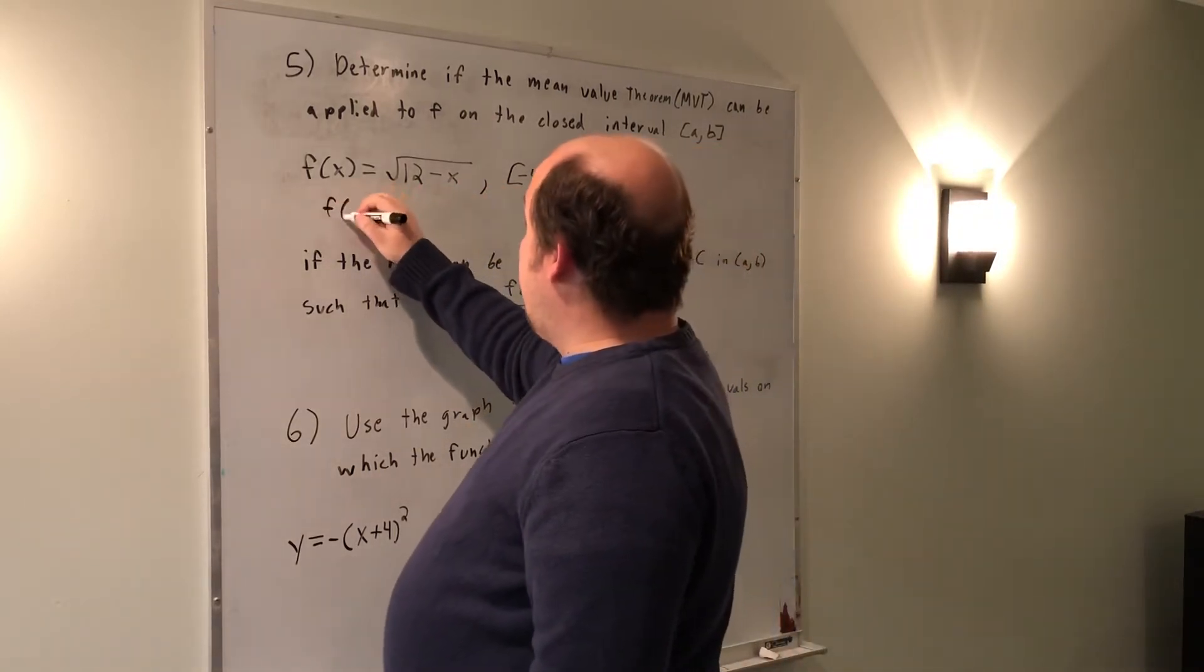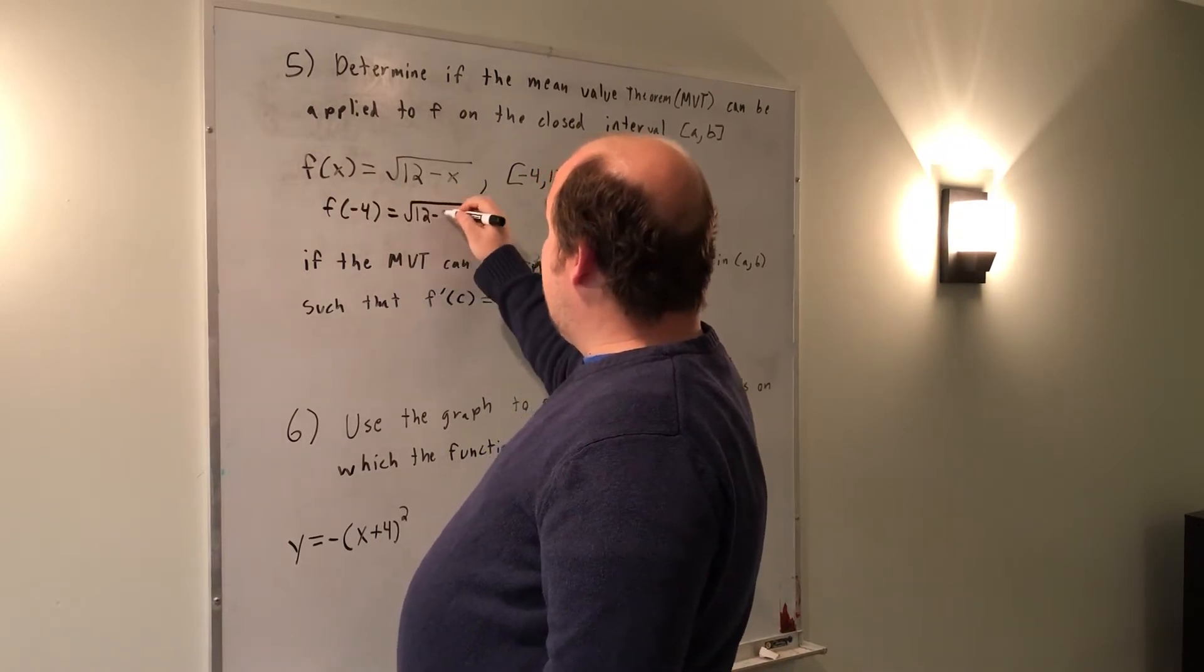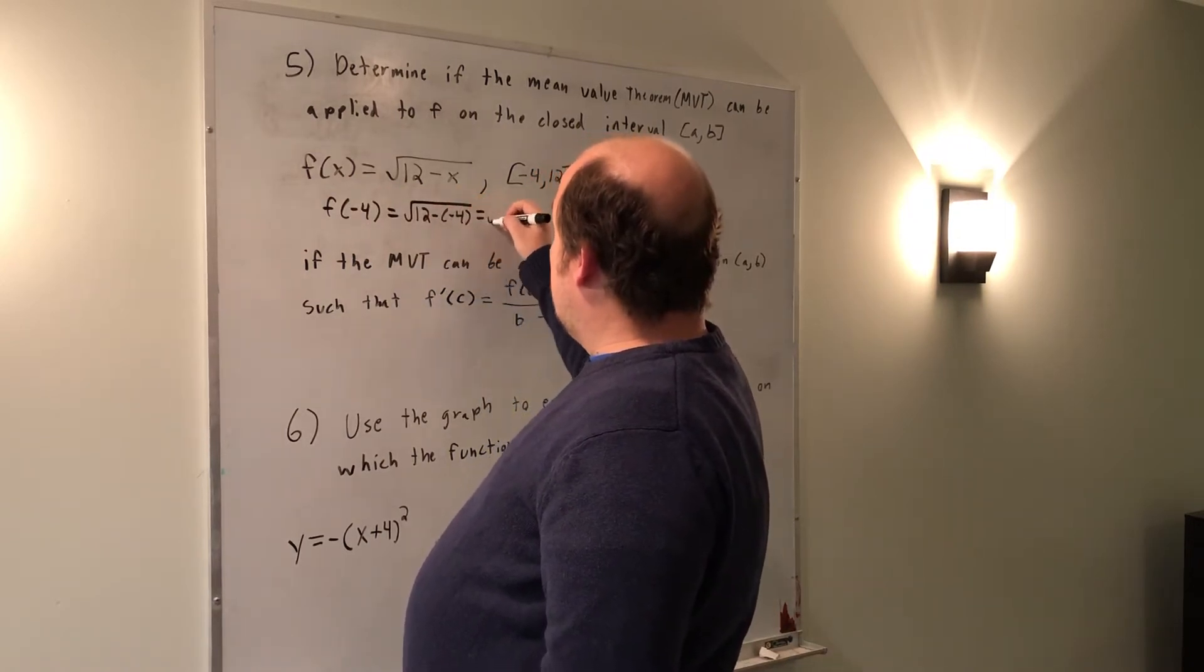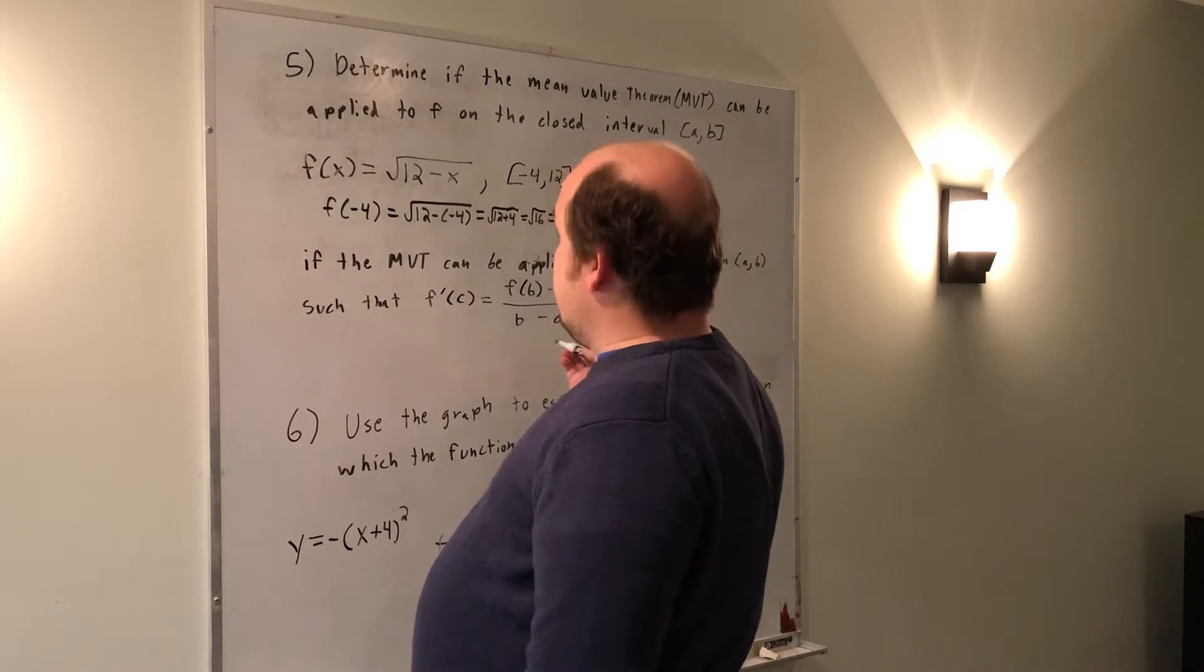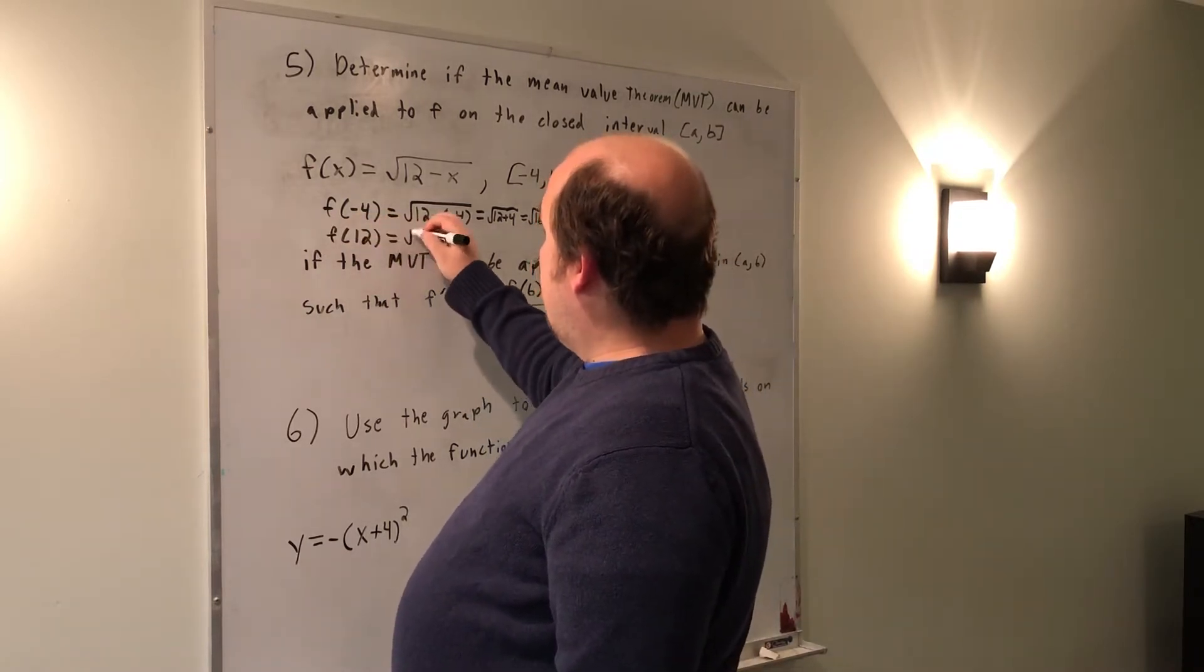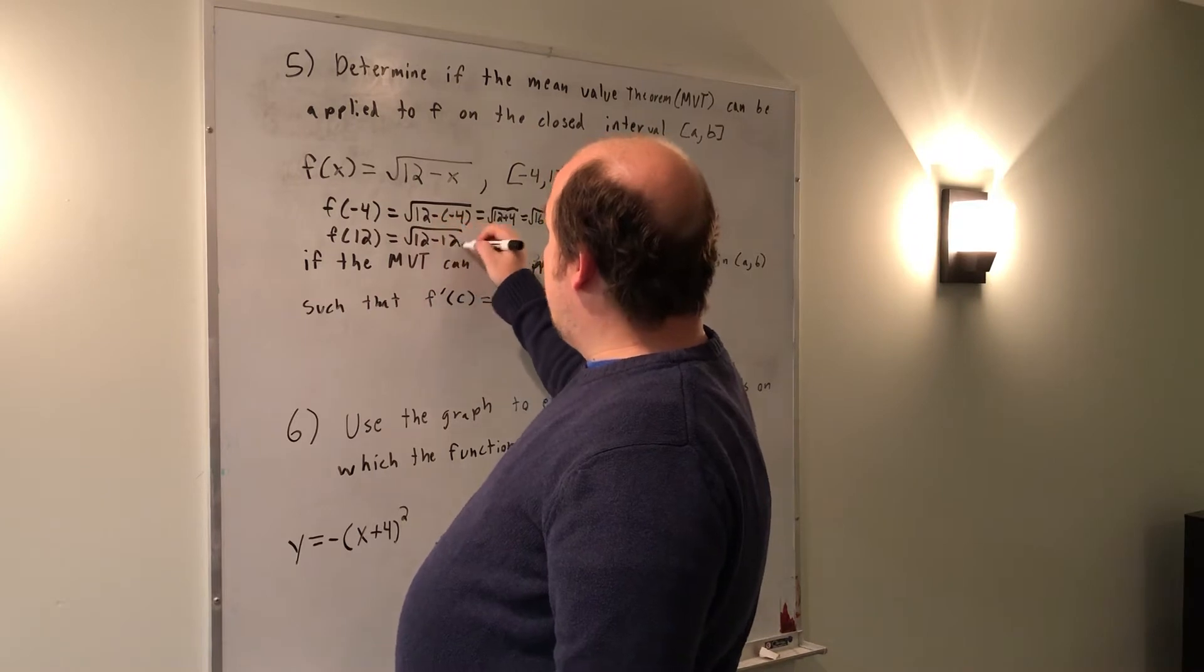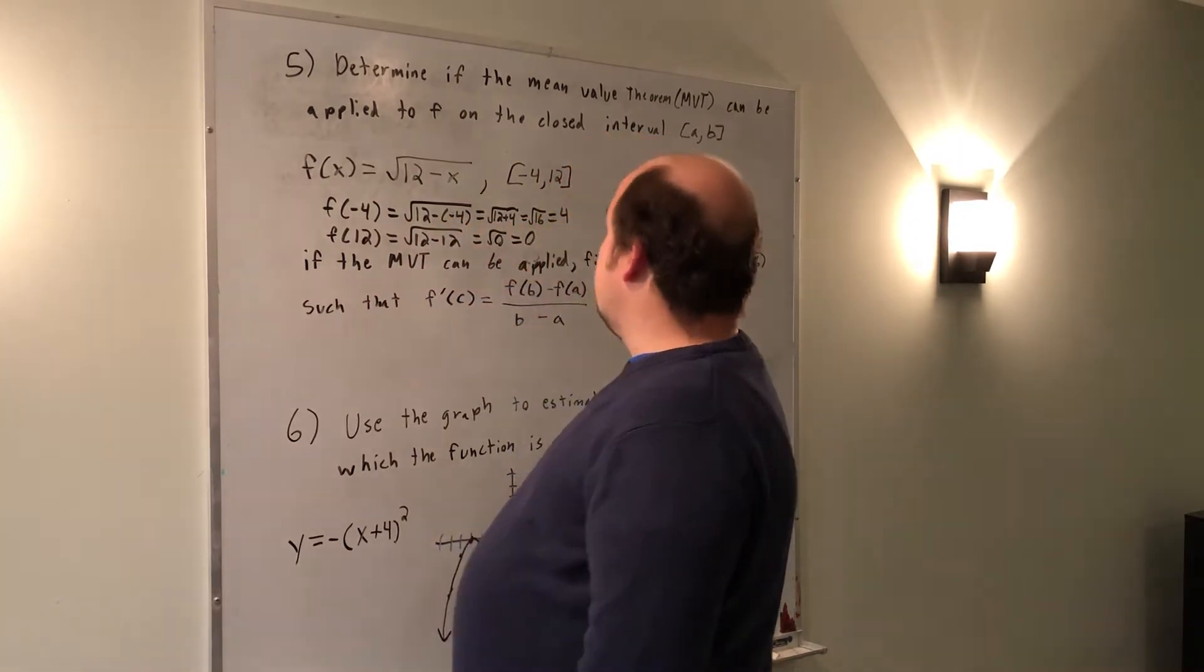So if I do f of negative 4, that becomes the root of 12 minus negative 4, which is the root of 12 plus 4, or the root of 16. I get that to be positive 4. When I put in positive 12, it becomes the root of 12 minus 12, which is the root of 0. That just equals 0.